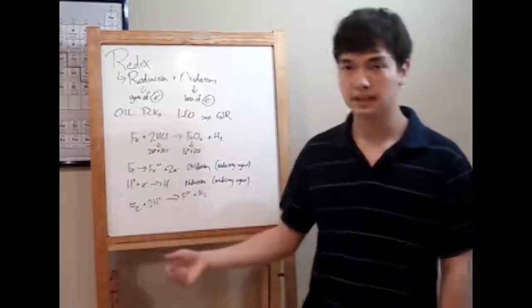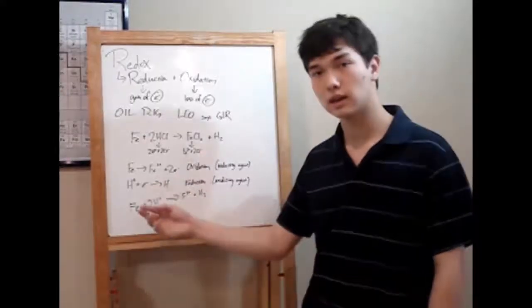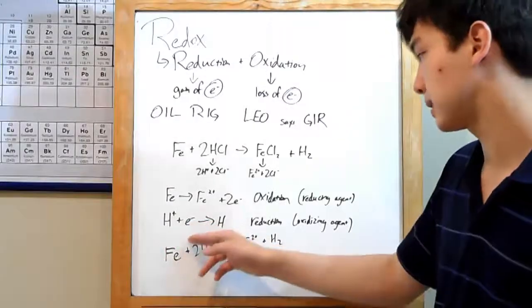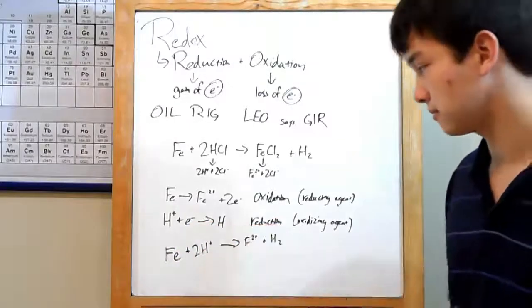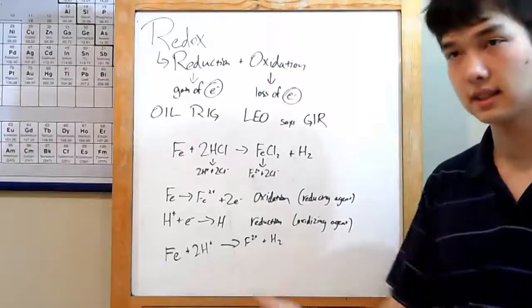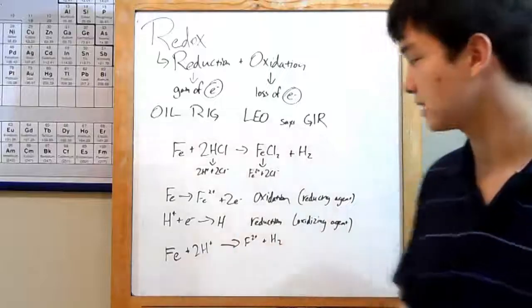In order to become completely neutral, hydrogen needs to gain one electron to cancel out its one positive charge. So like down here, H plus plus an electron goes to H. Reduction, again. This is called the oxidizing agent, because it'll take electrons away from something else, thereby oxidizing it.